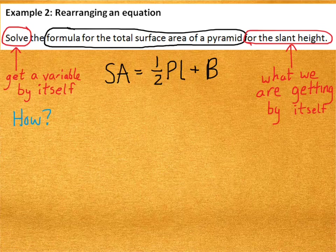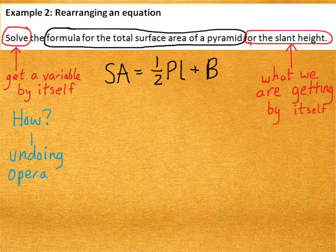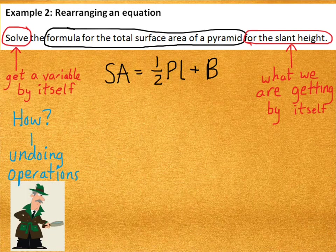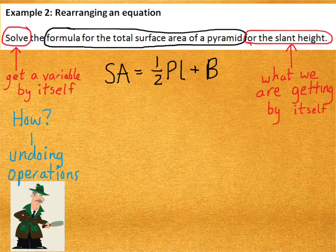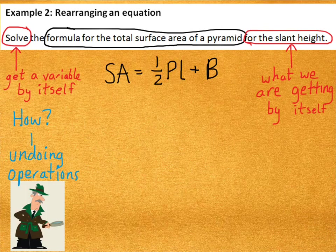Okay. Now, how are we going to go about getting that variable by itself? Well, it's going to be by undoing operations. Brilliant deduction, my dear Watson. Thank you, Mr. Holmes. Okay? So, if we're going to undo some operations, what one will we undo first?